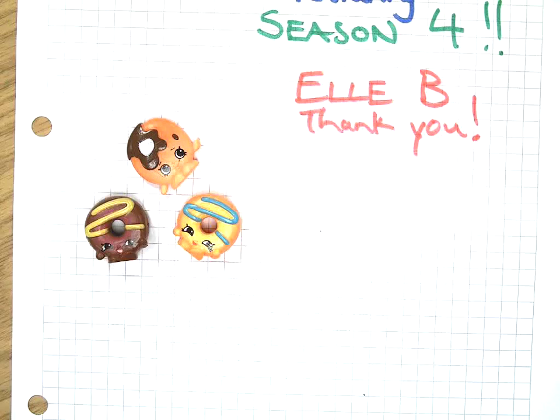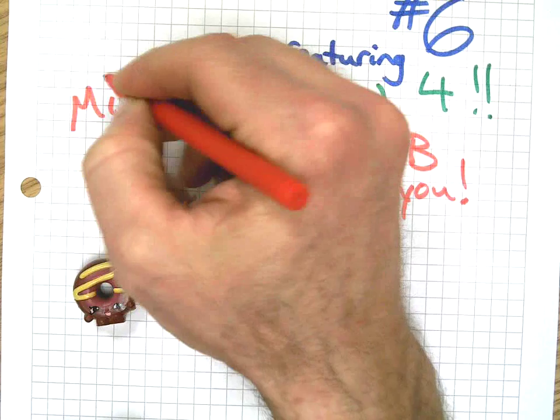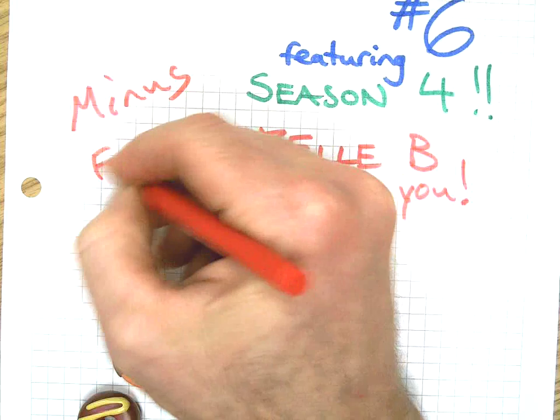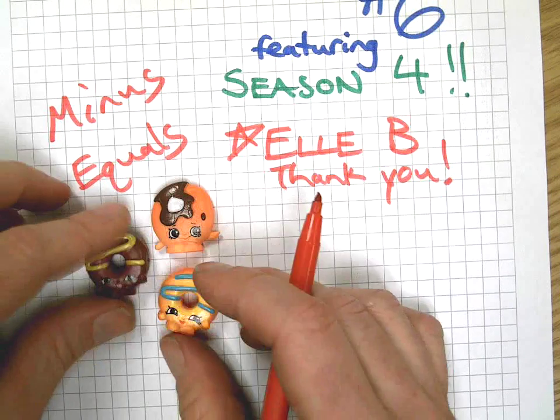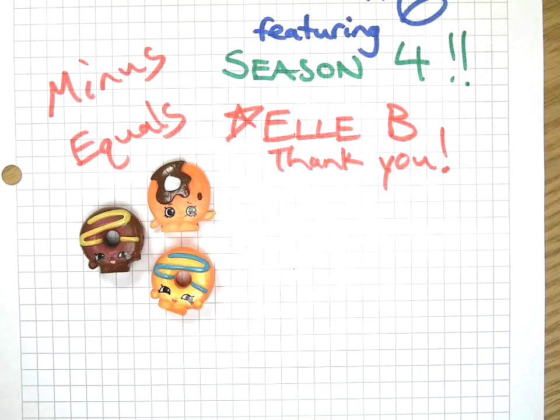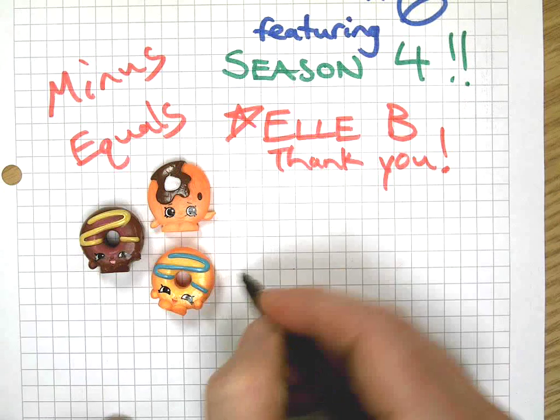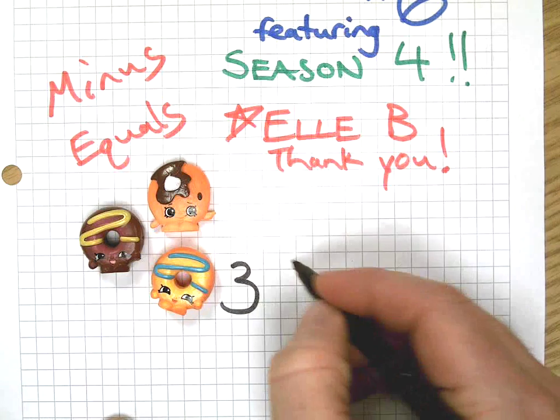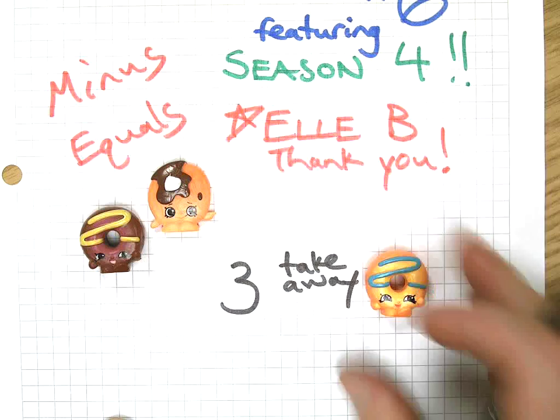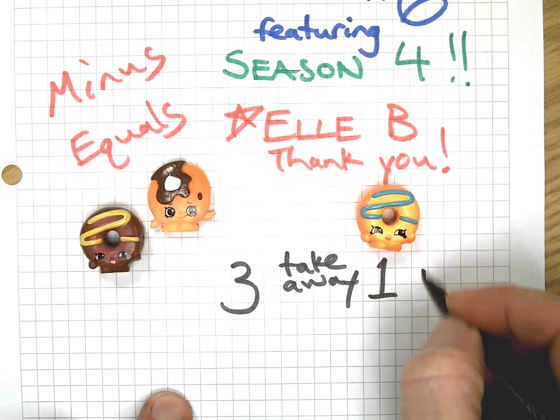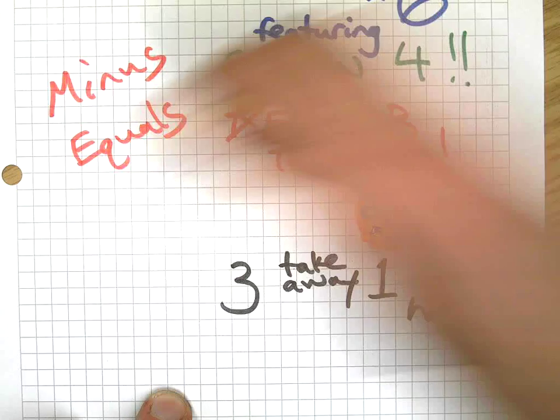When I was asking Elle what I should do my next video about, she said 'Dad, you should do minus and equals,' and I thought, you know, that's a great idea. So let's think about this: let's say you've got yourself three Shopkins - there's a couple of Dolly Donuts and Pancake Jake. Okay, there's three of them, right? Now if I take away one of them, take away one, I have how many left? Two.